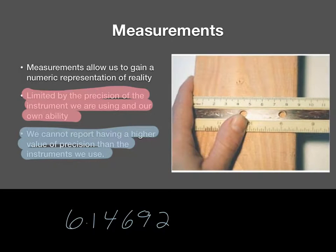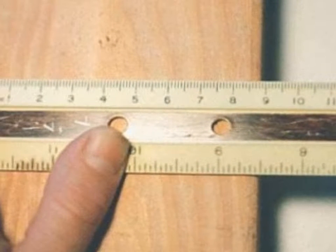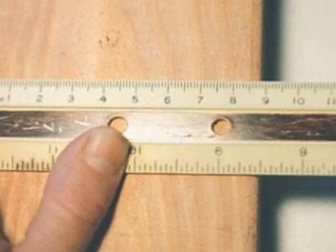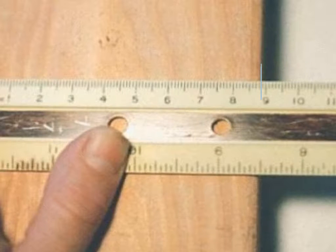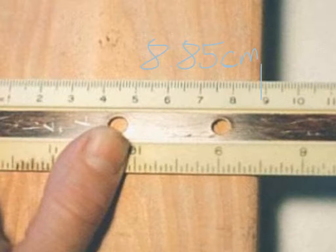If we look at our measurement right here, we have a ruler. We can make some estimates from that. We're using this device, which has its own limitations, and our own process has limitations too. This is in centimeters up top. I count: 8, and then 1, 2, 3, 4, 5, 6, 7, 8 — it's in between 8 and 9. So I'll give that 8.85 centimeters.